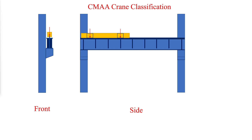The Crane Manufacturers Association of America (CMAA) has a specification guide which classifies cranes based on the service they provide and the expected load spectrum. Each crane class is associated with an expected life of the crane, the number of load cycles, and the average load intensity relative to the rated capacity of the crane. These classes range from A to F.